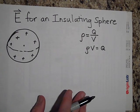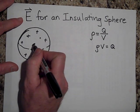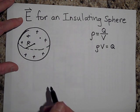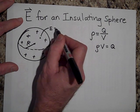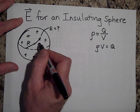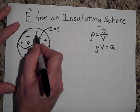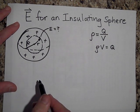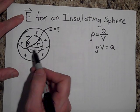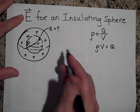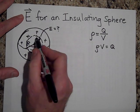Let's say we want to know the field at a distance lowercase r away, where the total radius of the sphere is capital R. We want the electric field when r is smaller than capital R — that is, inside the sphere. To do this, we draw a Gaussian sphere and apply Gauss's Law: the total charge enclosed divided by epsilon-naught equals the net flux through the Gaussian surface.